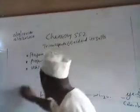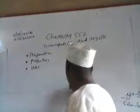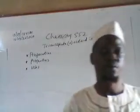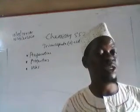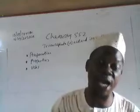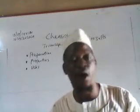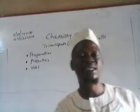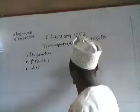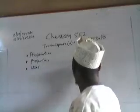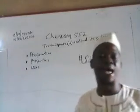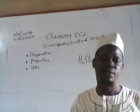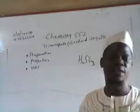The salts of trioxosulfate 4-acid can be classified into two types. You should remember that salts are formed when an acid is partially or completely neutralized. When the hydrogen atoms in the acid are fully replaced by a basic radical, or partially replaced by a basic radical, a salt is formed.